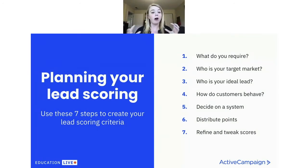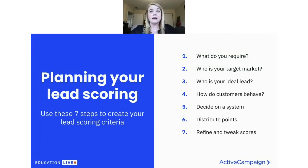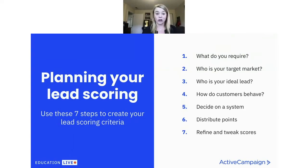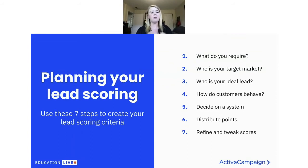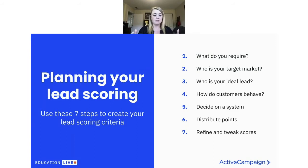After you've mapped out all the different ways your customers can behave, you have to decide on a system, because lead scoring is very customizable. We don't have any baseline score we're suggesting. If you're not sure, creating a simple 100-point system is usually the easiest way to start. Then you can look at all those different conversion behaviors — email opens, clicks, etc. — and think about how much of those 100 points each is worth to you.